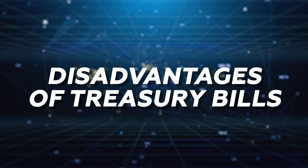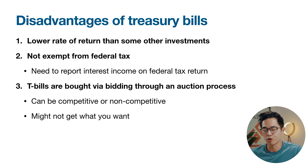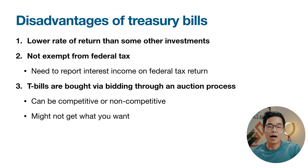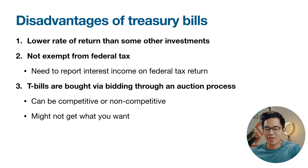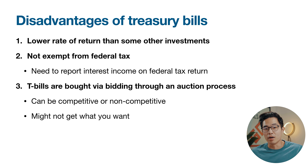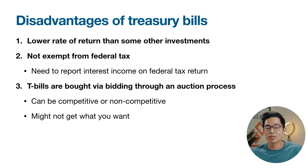Now, what are some disadvantages of T-bills? The first is that they have a lower rate of return than some other investments — the historical performance of the stock market is generally a little bit higher than T-bills. But with inflation right now so high, T-bills are actually paying out around 5% interest, though that might change depending on when you're watching this. They're also not exempt from federal tax. And T-bills are bought via an auction process, which can be competitive or non-competitive, and you might not actually get what you want. I'll show you how to go through this process later in the video.